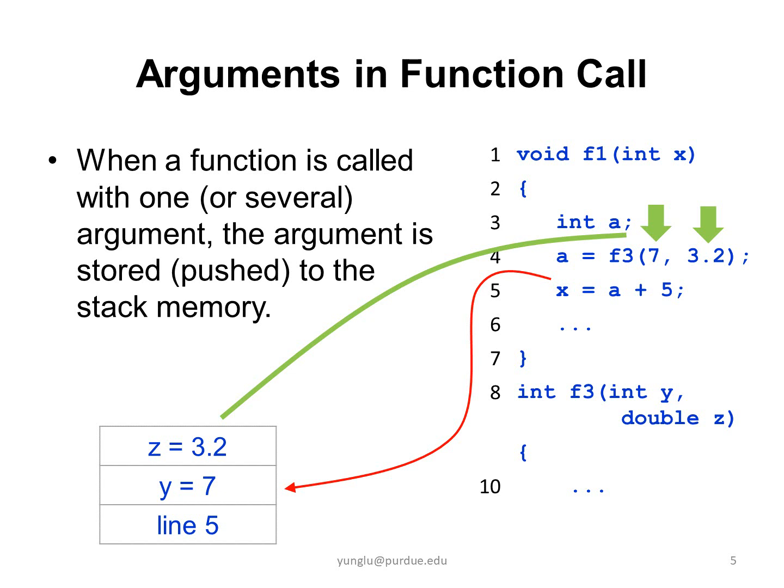Let us review what we have learned so far. When a function is called, the statement after the call is stored in the stack memory. If the call has an argument, the argument is stored in the stack memory. If the function call has multiple arguments, all of them are stored in the stack memory.